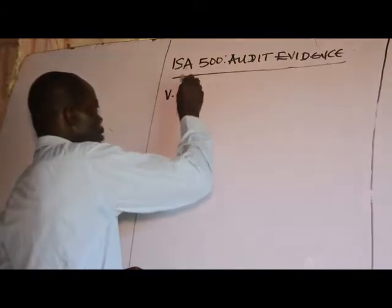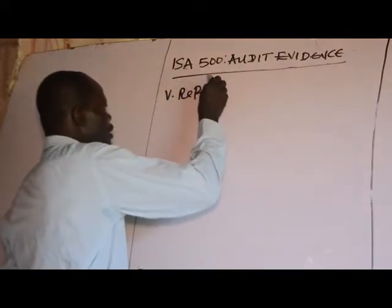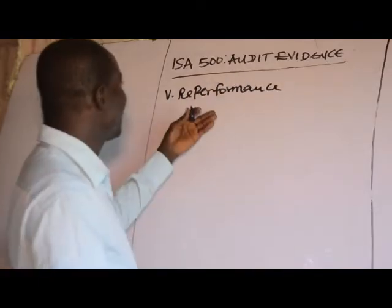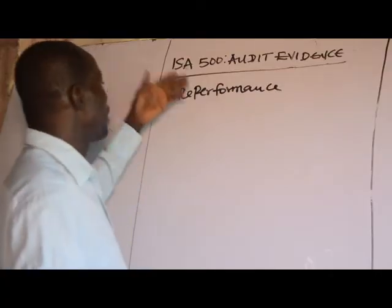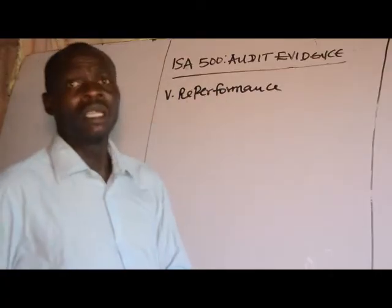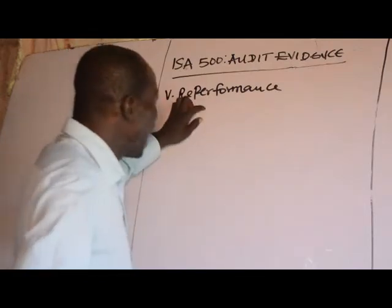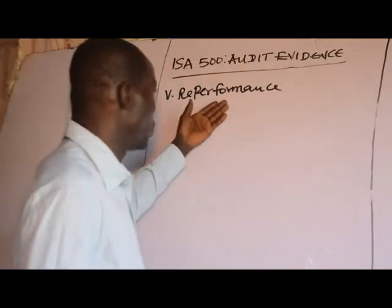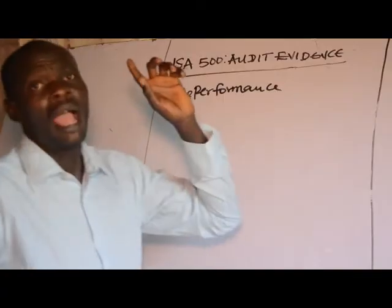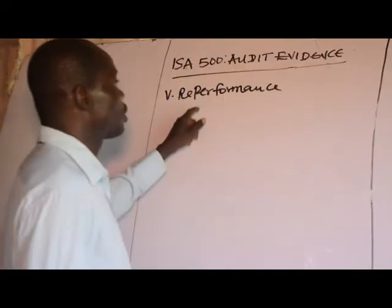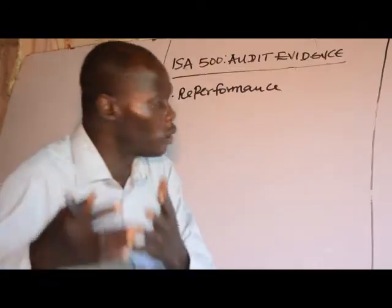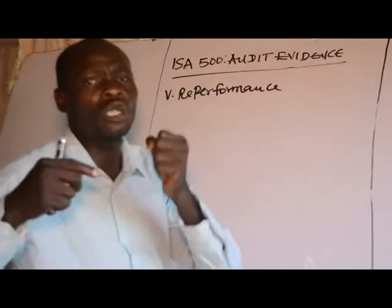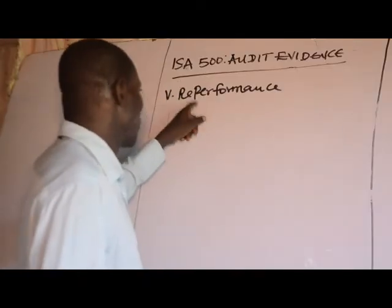Number five, we have re-performance. Re-performance is the independent execution of procedures or controls that were originally performed as part of the entity's internal control.